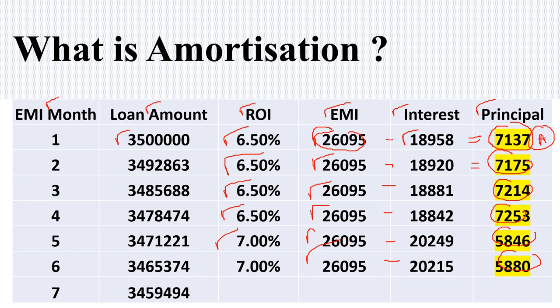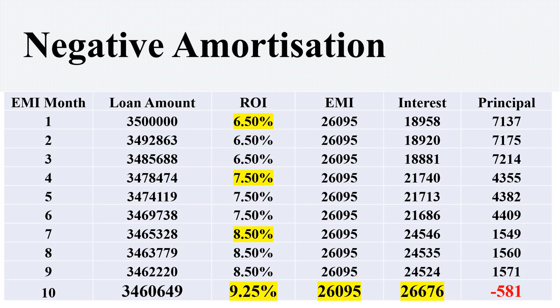Under amortization, from your monthly EMIs, after reducing the interest applicable on the borrower, whatever goes to the principal is called amortization — it is the bifurcation of EMI in the form of principal repayment. Now, after understanding amortization, let me explain negative amortization using the same example: Rs. 35 lakh loan at 6.5% ROI with EMI of Rs. 26,095, where first month interest was Rs. 18,958 and amortization was Rs. 7,137.